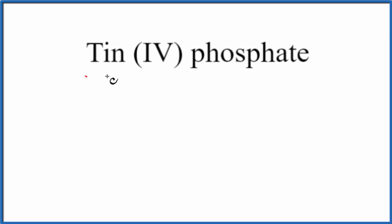In this video, we'll write the formula for tin(IV) phosphate. So the first thing we'll do, we'll write the element symbol for tin. That's just Sn from the periodic table.